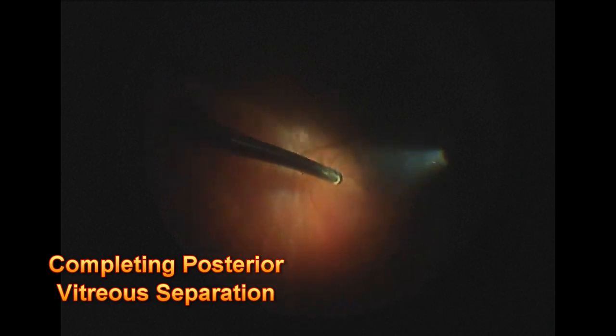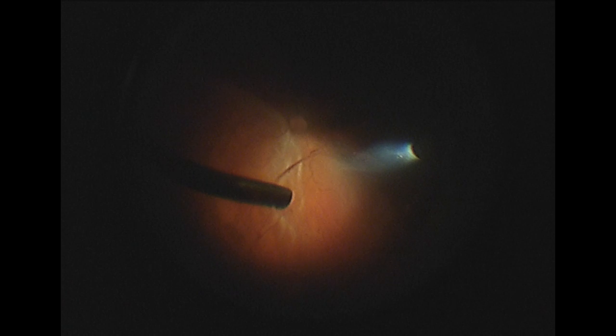In this patient the vitreous was still adherent to much of the posterior surface of the retina. Here you see the use of the vitrectomy probe just under suction to pull the vitreous forward in the eye, and here you see the suction and cutter being used to remove the vitreous from the eye.